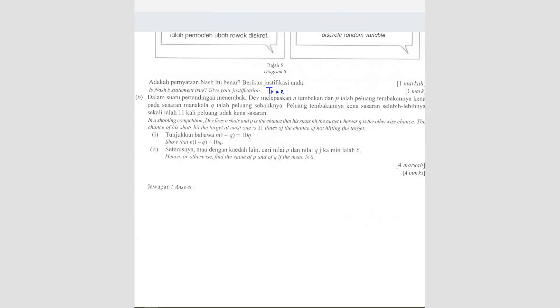Question B. In a shooting competition, Dev fires N shots. N number of shots. P is the chances of his shot hitting the target. So this is the probability of success. Q is the probability of failure.